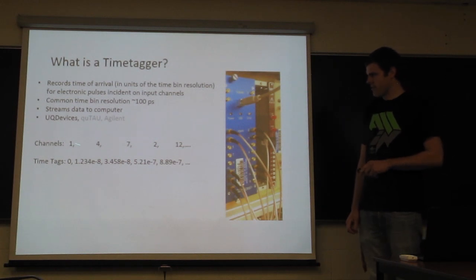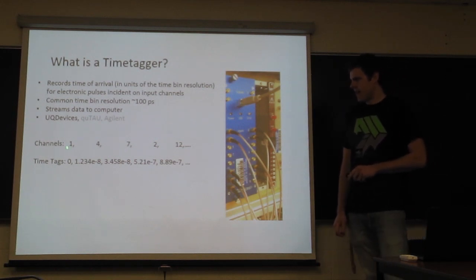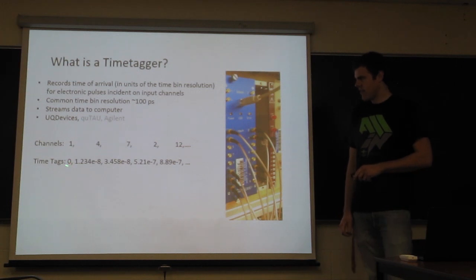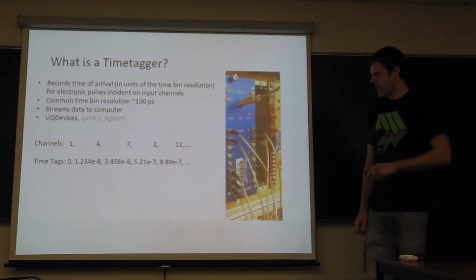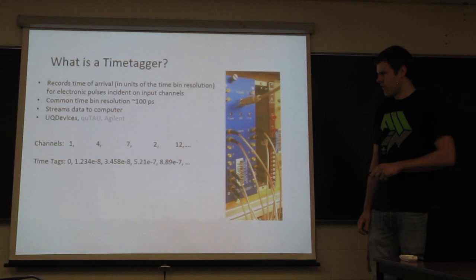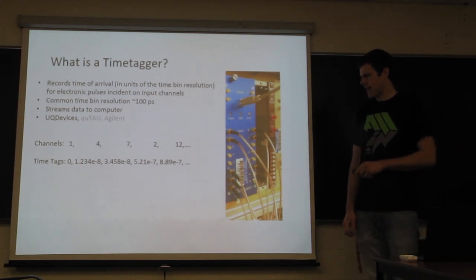So the data that comes from this is something like this. You have two streams where an event will say, okay, on channel one, time zero, I got a click. And then I check on channel four, at some other time I got a click, and so on.